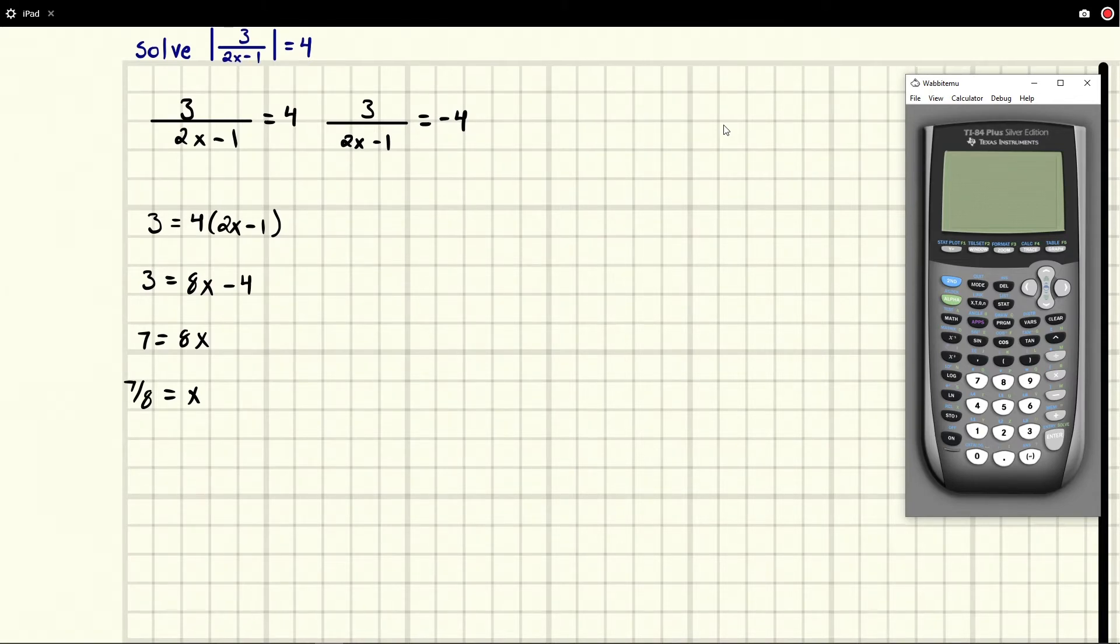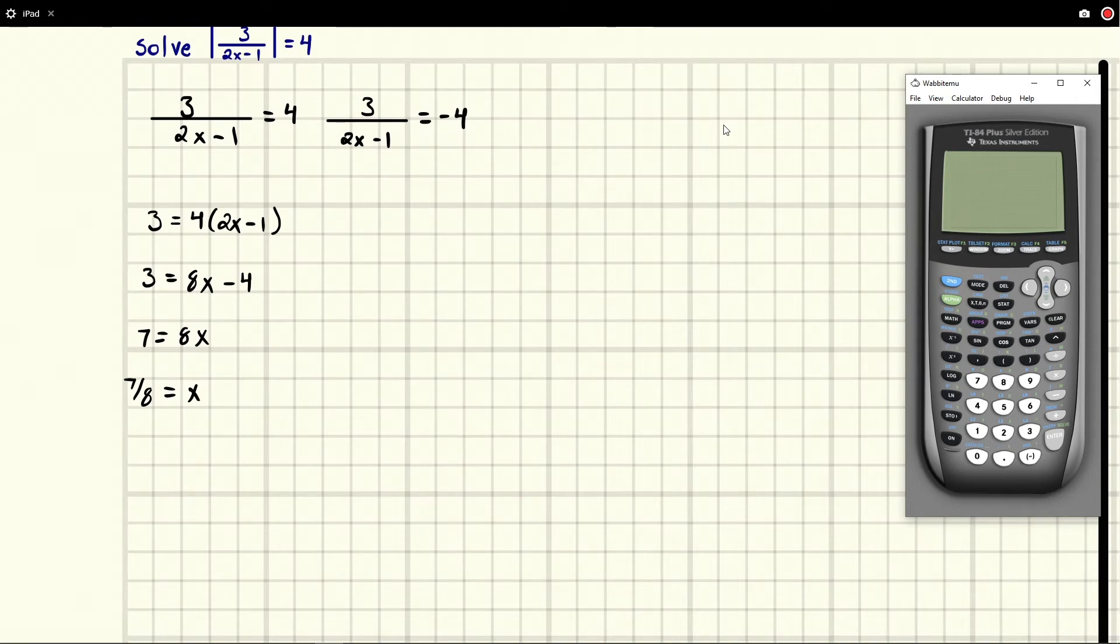The next one we simply solve the same way. We're going to multiply by 2x minus 1 to both sides, and on one side we're going to be left with 3, and on the other side we're going to be left with 2x minus 1 times negative 4.